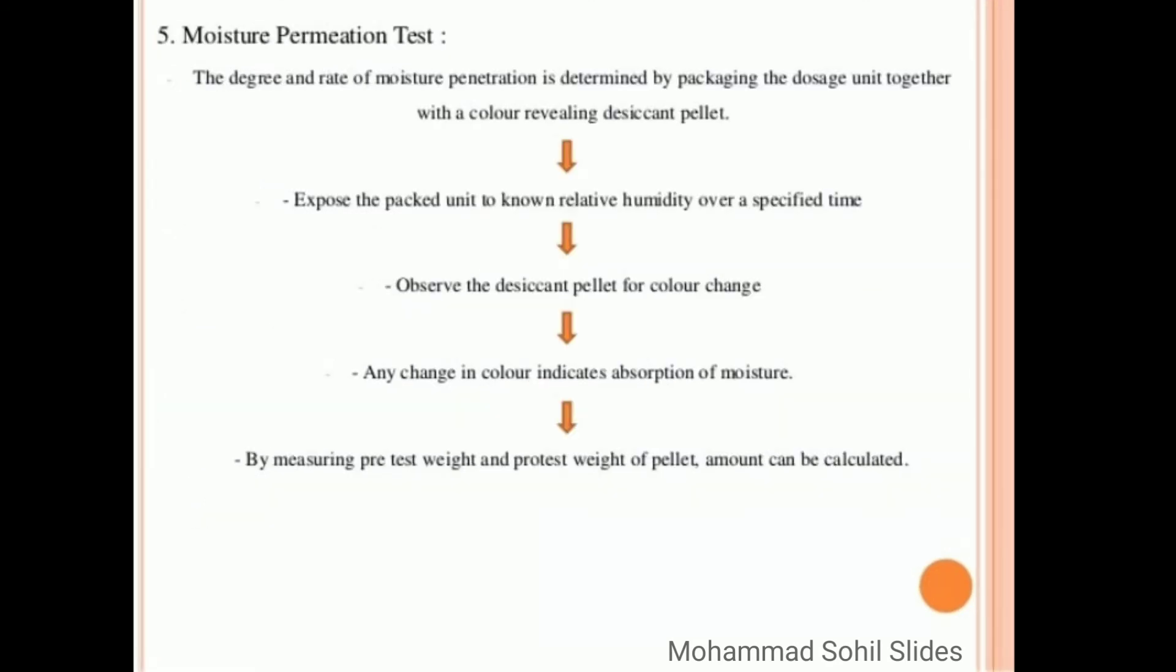Now the last test is moisture permeation test. The degree and the rate of moisture permeation is determined by packaging the dosage unit together with a color-revealing desiccant pellet.